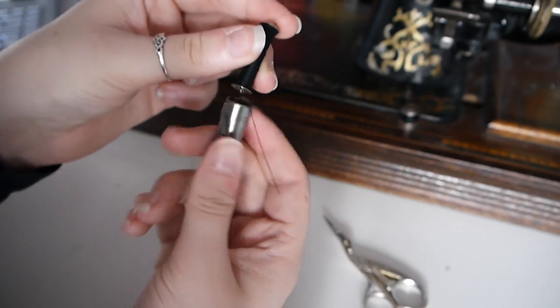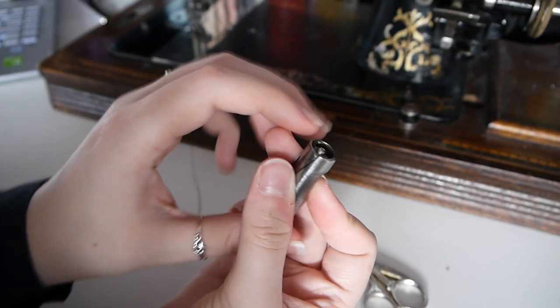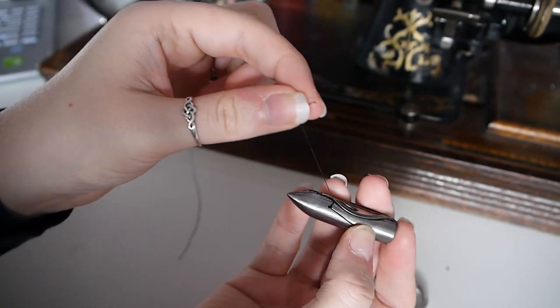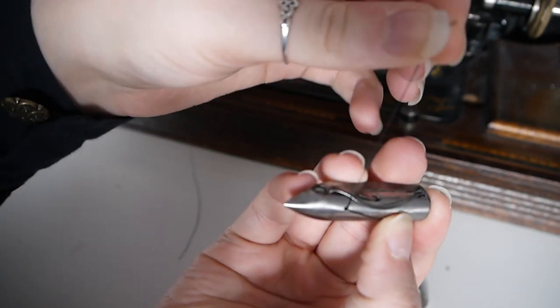Put the bobbin in the shuttle with the thread tail first. Pull the thread through the groove and hold the top of the bobbin in place with your finger.